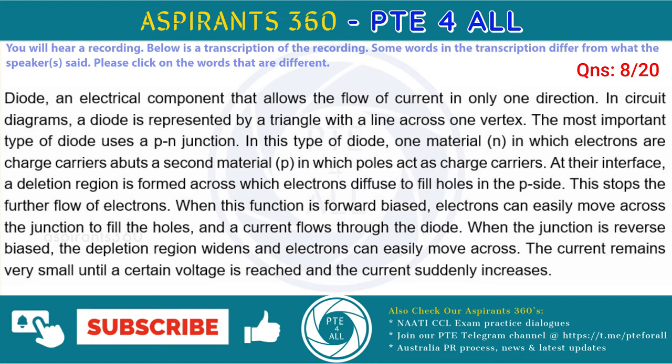At their interface, a depletion region is formed across which electrons diffuse to fill holes in the p-side. This stops the further flow of electrons. When this junction is forward biased, electrons can easily move across the junction to fill the holes, and a current flows through the diode. When the junction is reverse biased, the depletion region widens and electrons cannot easily move across. The current remains very small until a certain voltage is reached and the current suddenly increases.